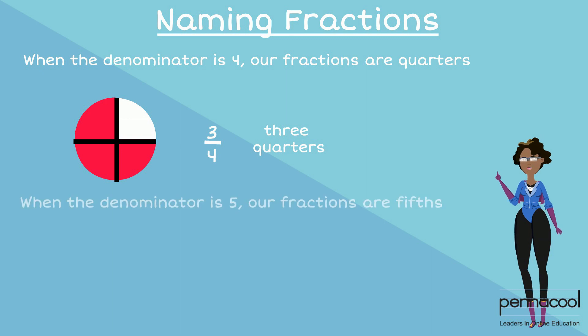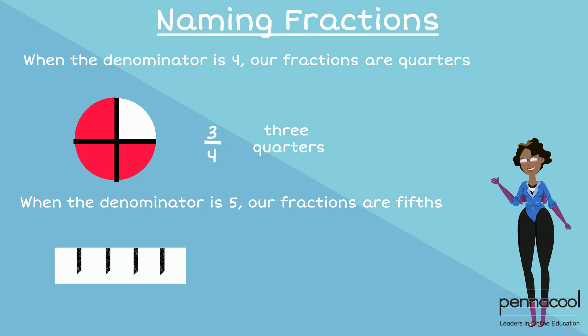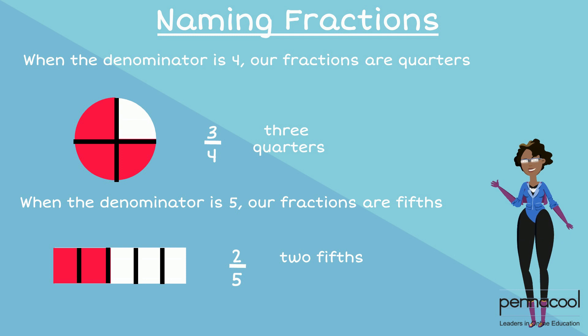When the denominator is five, our fractions are fifths. Hence, if two parts are shaded out of five, the fraction is named two fifths.